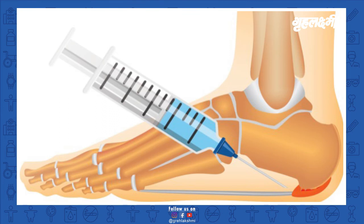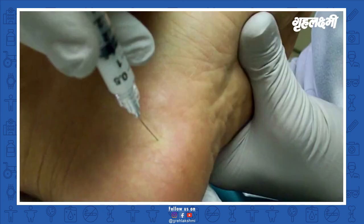If conservative management is not sufficient, the next step is injections. There are mainly two types of injections: steroids or PRP. These injections are best done under ultrasound guidance to ensure accuracy and reduce complications. Steroid injections have an anti-inflammatory effect that can help reduce the pain, and a low dose of steroid injection can be very helpful.